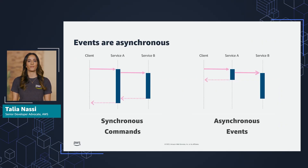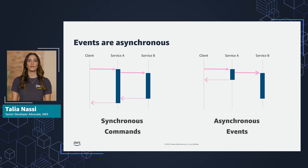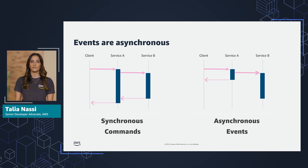In a synchronous model, shown on the left, the client makes a request to Service A. Service A calls Service B, but then Service A waits for Service B to respond before it continues on and eventually responds to the client. In an event-driven architecture, there is no response path — the service surfaces the event and then immediately moves forward. The tradeoff is that there is no direct channel for Service B to pass back information to Service A besides confirming it received the event, but in many cases you don't need that explicit coupling between the request and response channels.